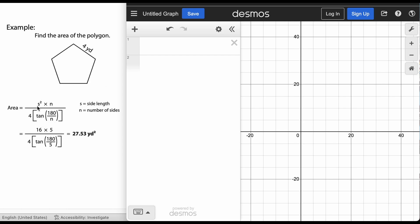Using this formula I'm going to take that s squared, side length squared, four squared, so that becomes 16 times five, times the number of sides we said five sides, so times five.